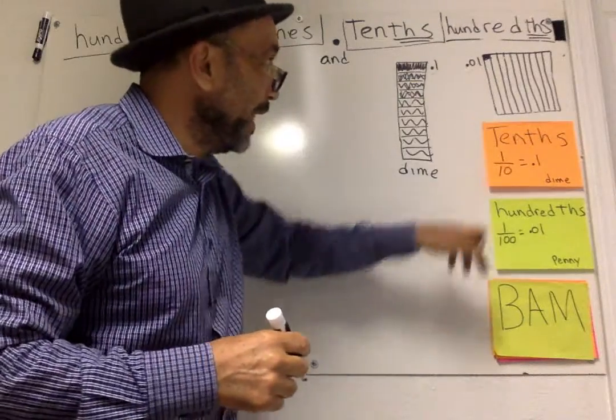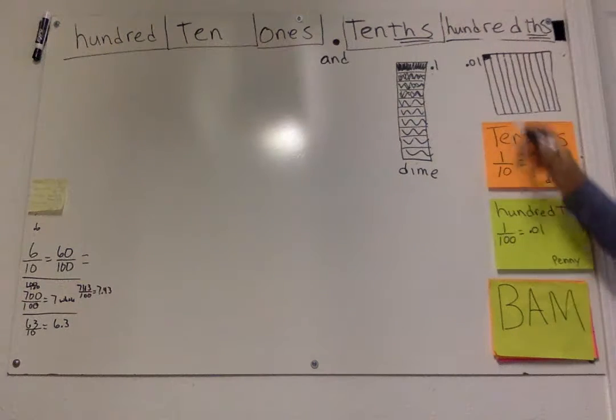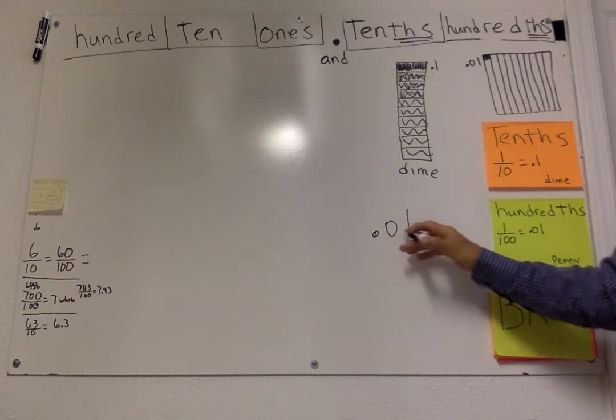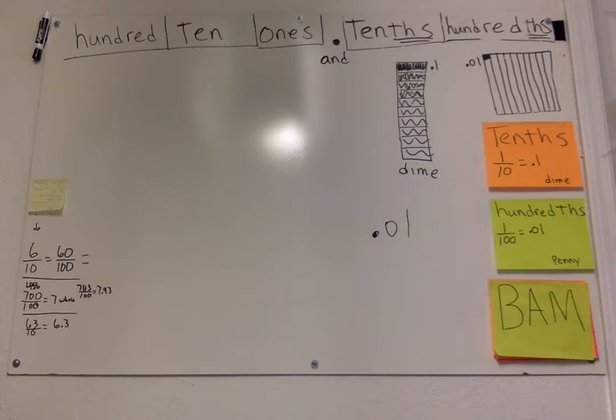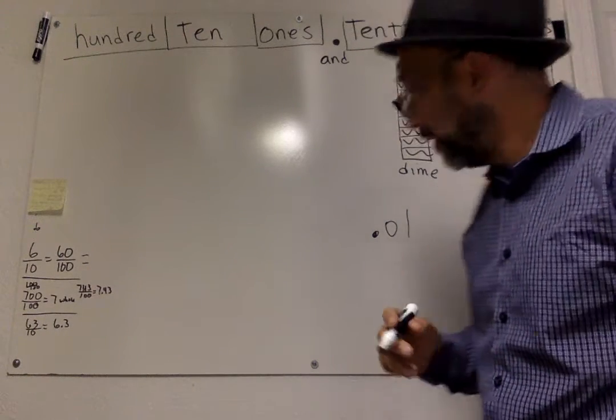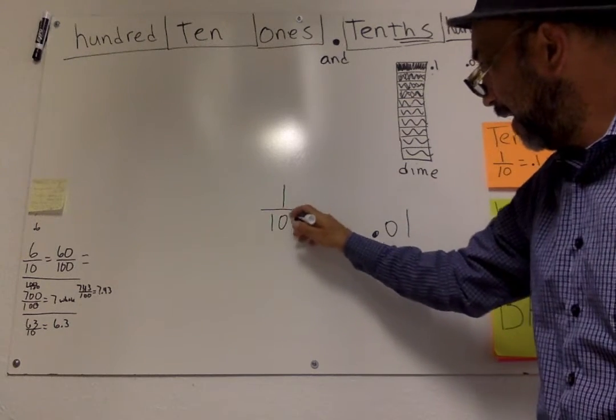So this is one tenth. Now, when you go to hundreds, it's represented by .01, decimal zero one. Why? Because it's just one little one out of the hundred. That's one penny. How many do you need? You need a hundred of those. So that's why it's one out of a hundred.